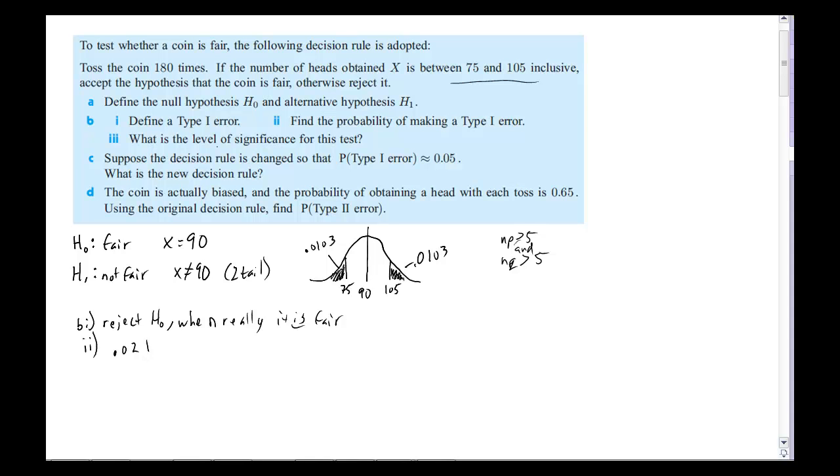All right, now the question is, what is the level of significance for this test? And we'll say that the level of significance, then, is about 2%. All right, so there we've got, and I guess this should be three digits for IB, so 0.0206. All right, then we go on to letter C.